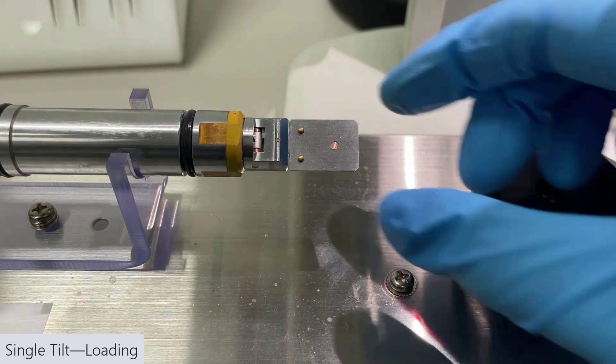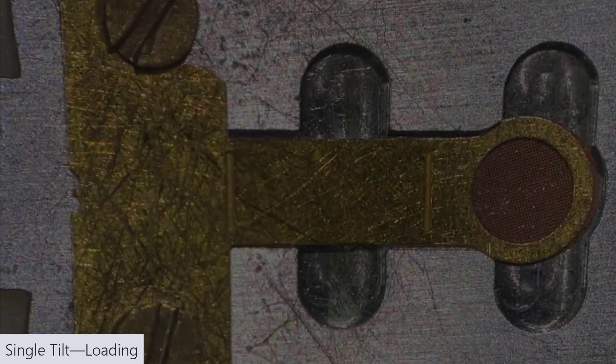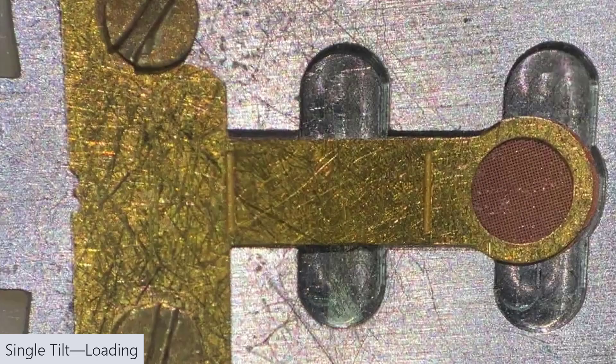It'll move side to side a little bit, and that's fine. You don't want the blade to be able to come out. This is what it looks like when the sample is seated properly.